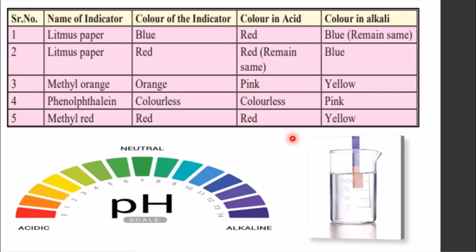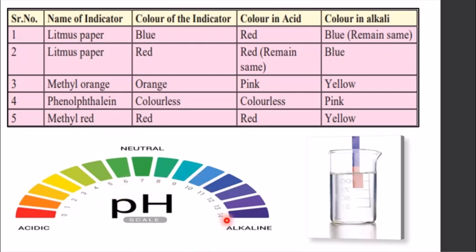With these color changes, we can identify whether something is an acid or a base. We also use the pH scale, which goes from 0 to 14. A pH of 7 is neutral — the color is greenish. From 0 to 6, a substance is acidic. From 8 to 14, it is alkaline, or what we also call an alkali or base.